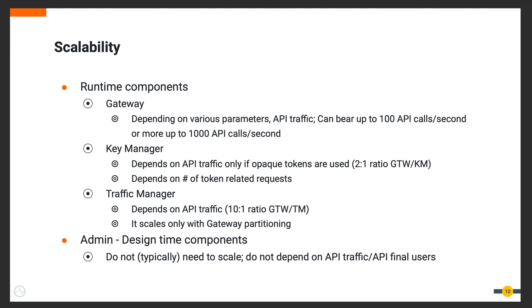The gateways can scale when traffic grows, meaning you can easily increase the number of gateways in your deployment. You can also easily increase the number of key managers in parallel to the number of gateways, but only if you use opaque tokens — tokens whose validity is verified with a call to the key manager. In that case, consider that one key manager can serve up to two gateways, so the gateway-to-key-manager ratio is generally two to one.